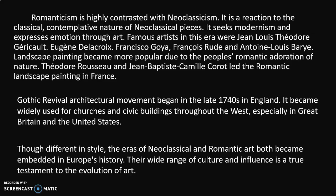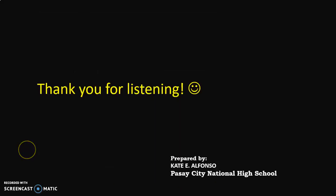The Gothic Revival architectural movement began in the late 1740s in England. It became widely used for churches and civic buildings throughout the West, especially in Great Britain and the United States. Though different in style, the years of Neoclassical and Romantic art both became embedded in Europe's history. Their wide range of culture and influence is a true testament to the evolution of art.